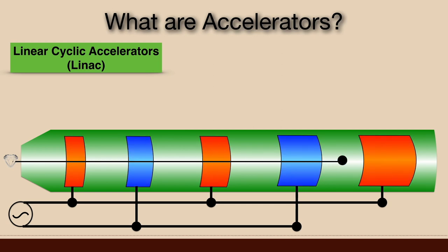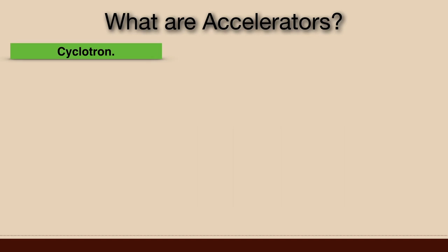LINAC can increase the energy of the particle to a significant extent, but the biggest problem in LINAC is placing a large number of electrodes in a long tube. Next is cyclotron. Lawrence and Livingston developed a method that avoids the limitation of LINAC.